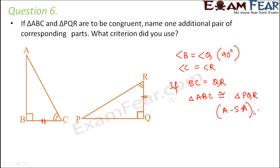Please do not confuse yourself. Many times, the moment students see a right angle triangle they feel that only the RHS criteria can make them congruent. That is not true. A right angle triangle can also become congruent by ASA criteria or SAS criteria. It depends on what conditions are given in the question, because you cannot assume that the lengths of the hypotenuse are equal for both triangles. Whatever values are given, based on those we determine by which criteria the two triangles are congruent.